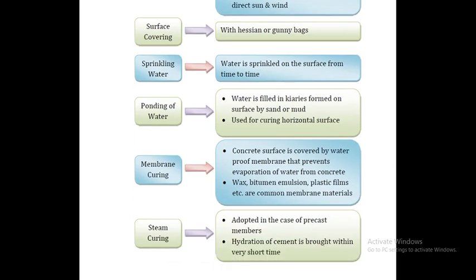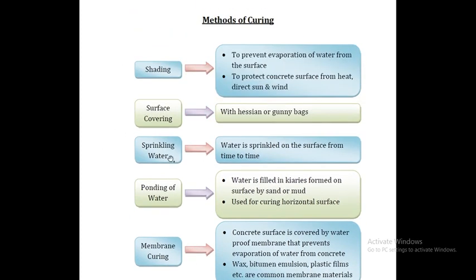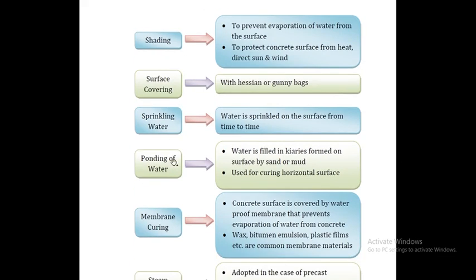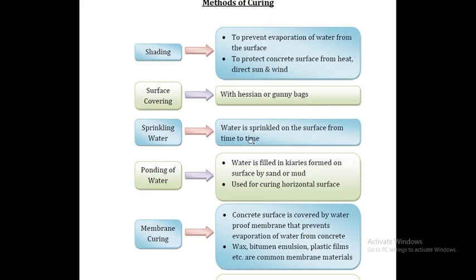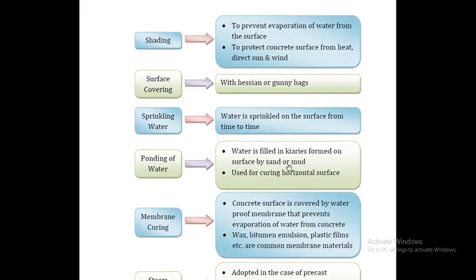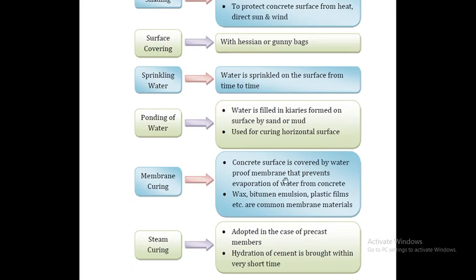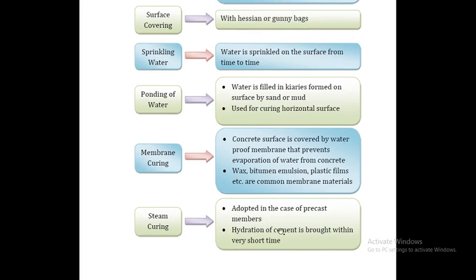Methods of curing include: shedding, surface covering, sprinkling of water, ponding of water, membrane curing, and steam curing. Shedding prevents evaporation of water. Surface covering uses hessian bags. Sprinkling of water provides plenty of water. A waterproof membrane prevents evaporation. Steam curing is also used.